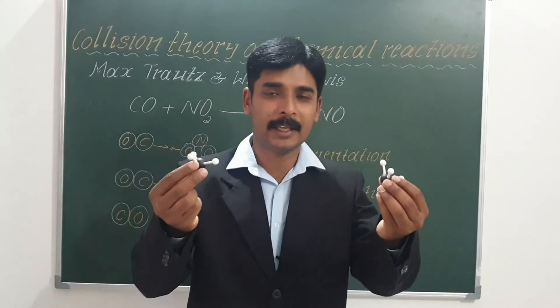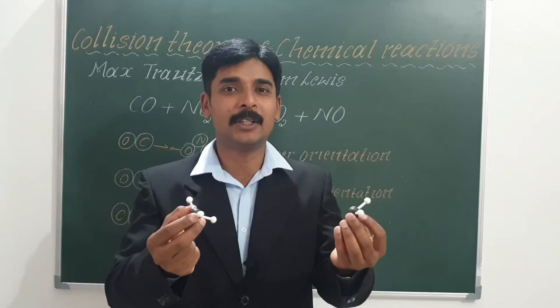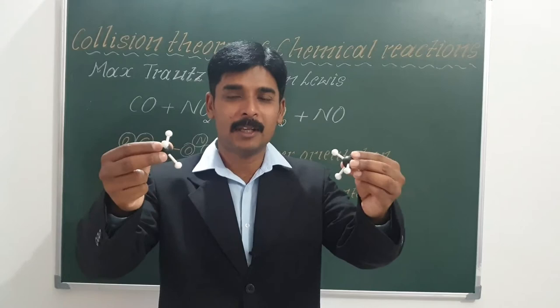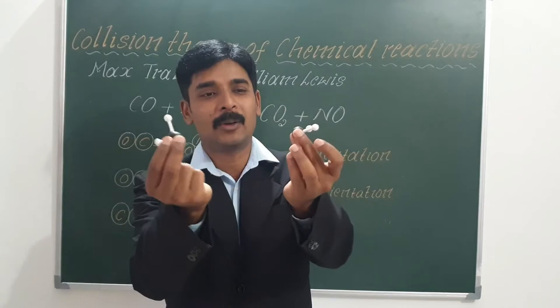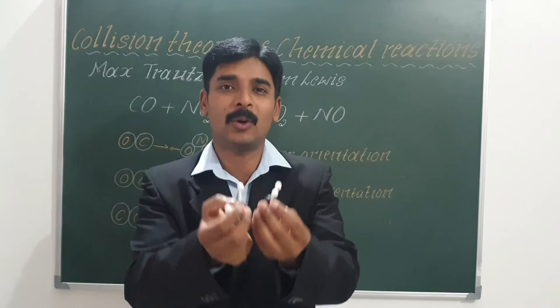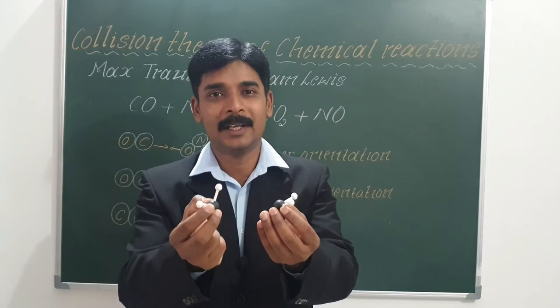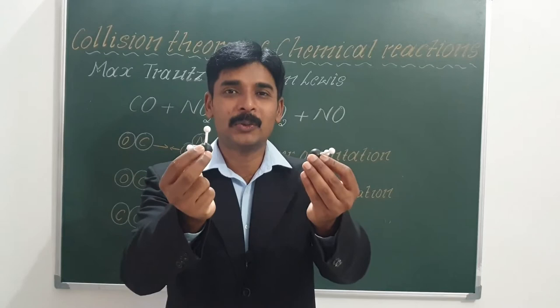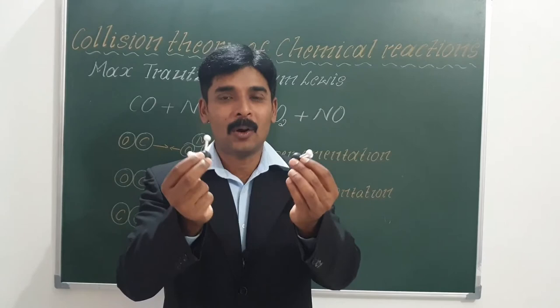Let us assume these two reactant molecules have energy equal to or more than activation energy and they collide. The collision between them can take place in many ways — they may approach and collide and bounce back, or collide in different orientations. When the reaction involves complex molecules, along with being activated they must have proper orientation. Only when they collide with proper orientation does bond formation occur; otherwise they just bounce back.